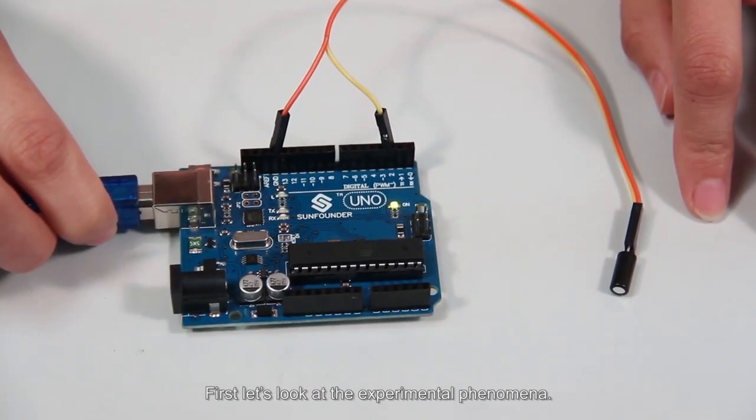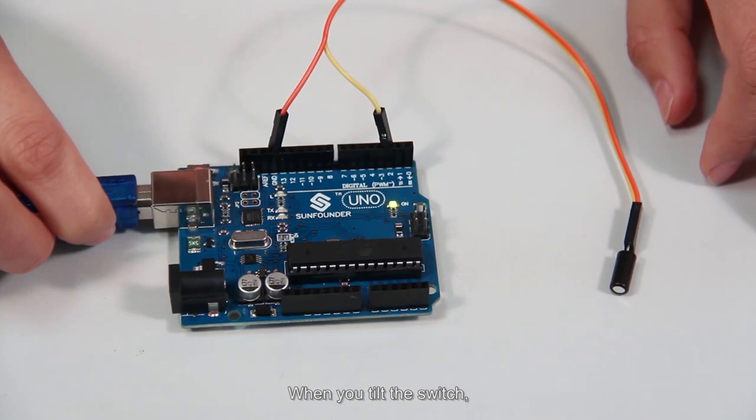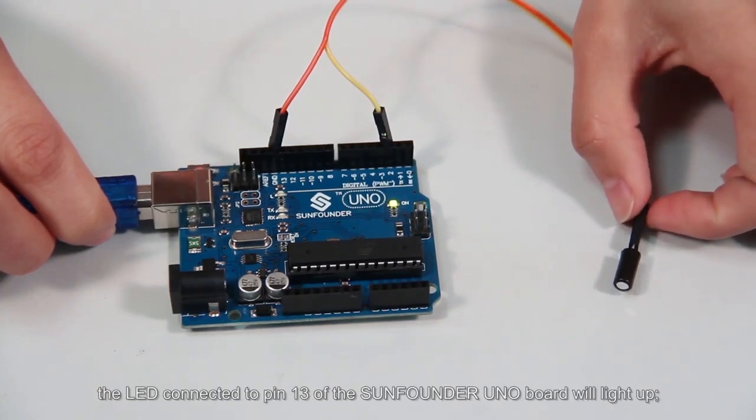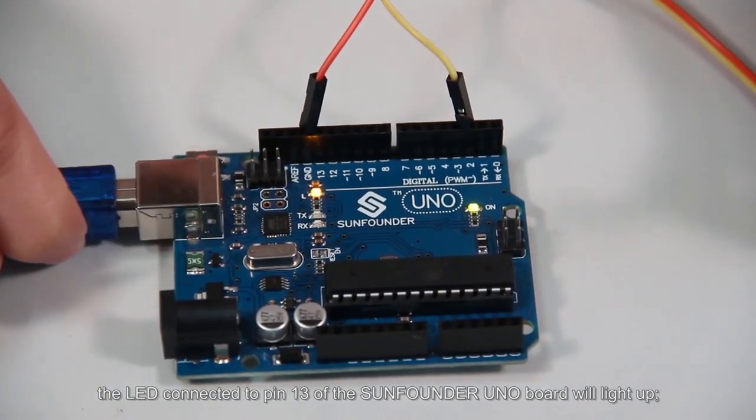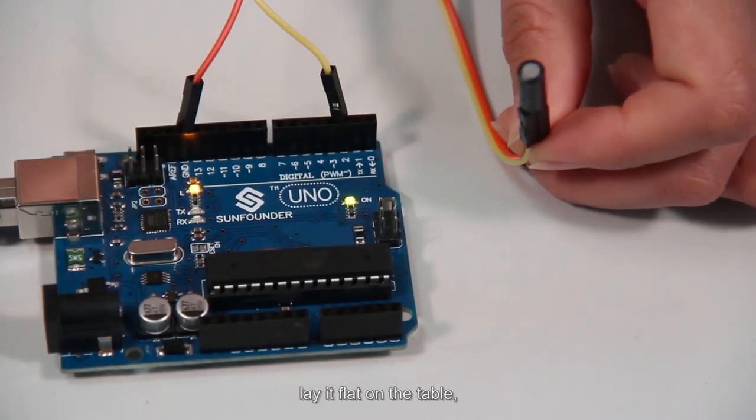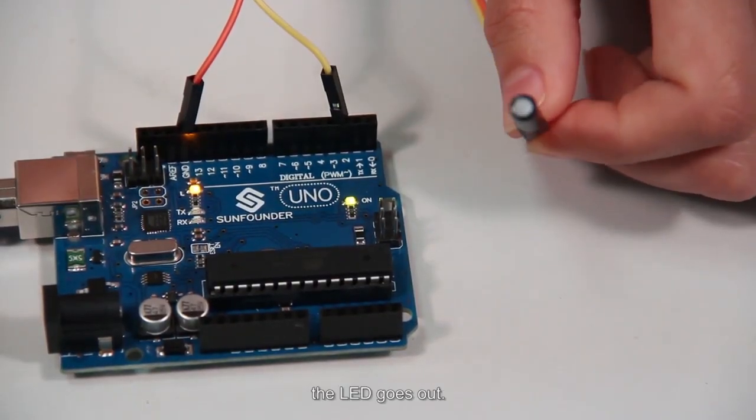First, let's look at the experimental phenomena. When you tilt the switch, the LED connected to pin 13 of the SunFounder UNO board will light up. Lay it flat on the table, and the LED goes out.